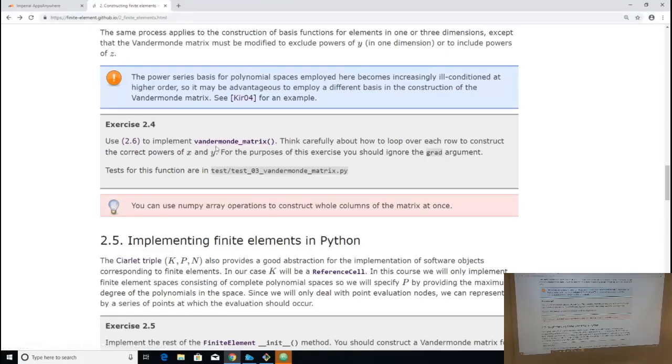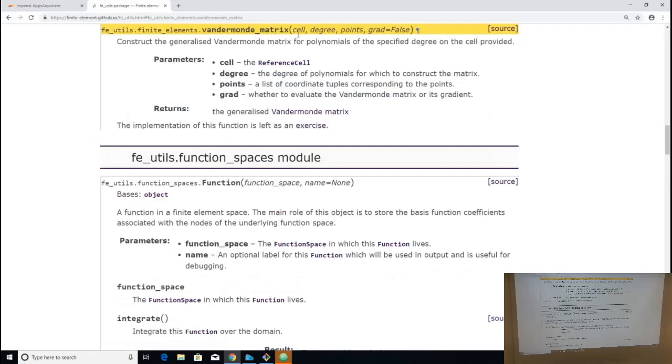So that's what exercise 2.4 is. So it's just go and build that Vandermonde matrix. So if you look at Vandermonde matrix, it takes cells. So we're used to that. So that's going to tell you whether you're one or two-dimensional for starters. Degree. So which degree of polynomials are we using? Points. What is the point set? That defines my set of nodes. So you now know why you were implementing Lagrange points. Because that's going to give you the value that you pass in there. And grad. You'll notice that it says grad equals false. For those of you who have bumped into this in Python before, that's how you set the default argument. So you don't need to pass an argument in that position. If you don't pass an argument in that position, grad will be false. And for the purposes of the current exercise, you should ignore the existence of grad.